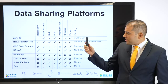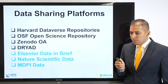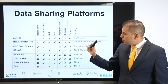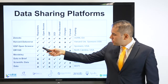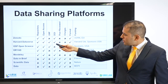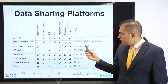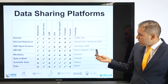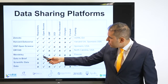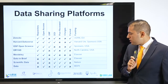Zenodo is funded by CERN and the EU. It is a repository, open access, does not provide a unique numeric fingerprint but does provide a DOI, no peer-reviewing, no charges, and accepts any format. Harvard Dataverse is a repository, open access, has a unique numeric fingerprint and DOI, no peer-reviewing, no charges, any format, sponsored by Harvard University. OSF is sponsored by the USA and a group of sponsors. DRIAD is sponsored by North Carolina University and the USA. Mendeley is sponsored by Elsevier — it's a repository, open access, no unique number but has a DOI, no peer-reviewing, no charges, but does not accept any format; they have specific format requirements.